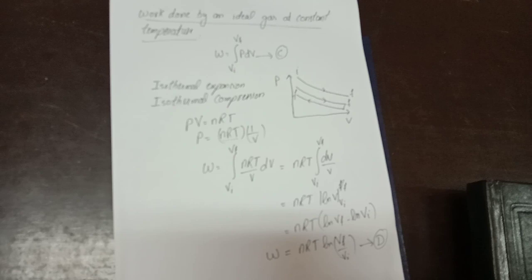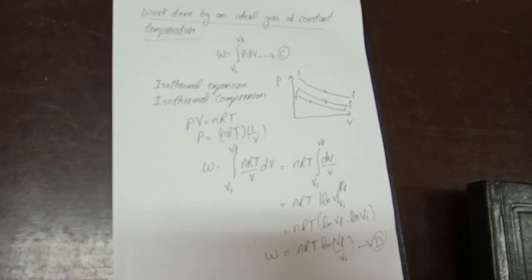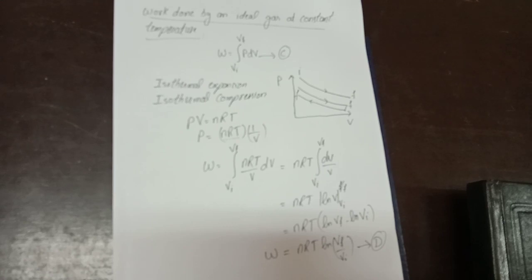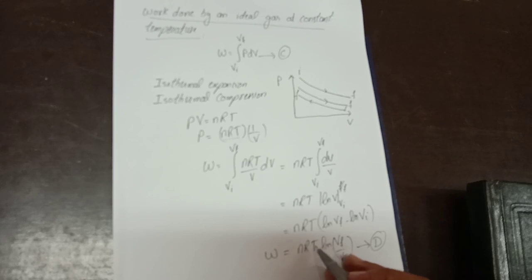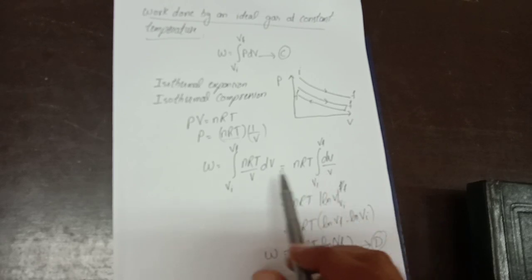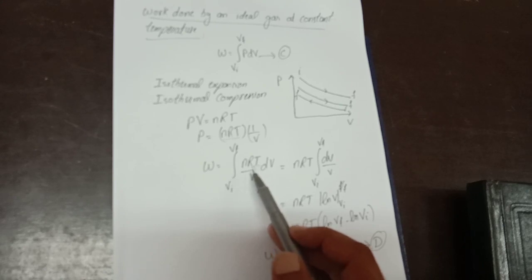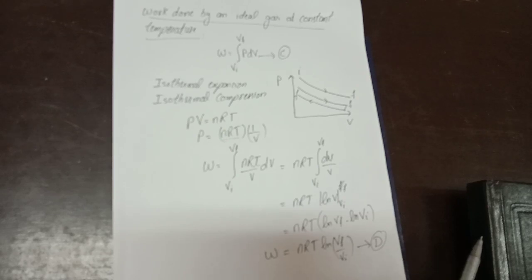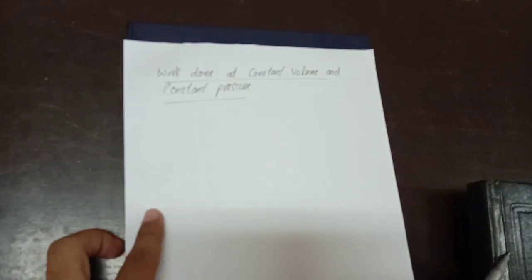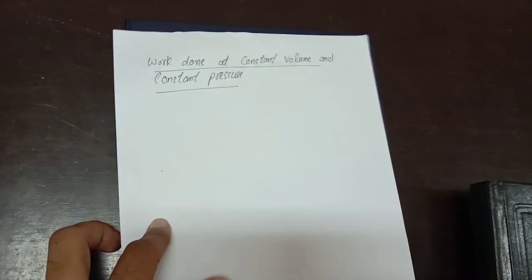The equation W = nRT ln(Vf/Vi) derived for constant temperature cannot be applied to all cases because it is a specific case where temperature is kept constant. When temperature is not constant it cannot be taken out as a constant from the integral, so this equation cannot be applied to all cases of an ideal gas.